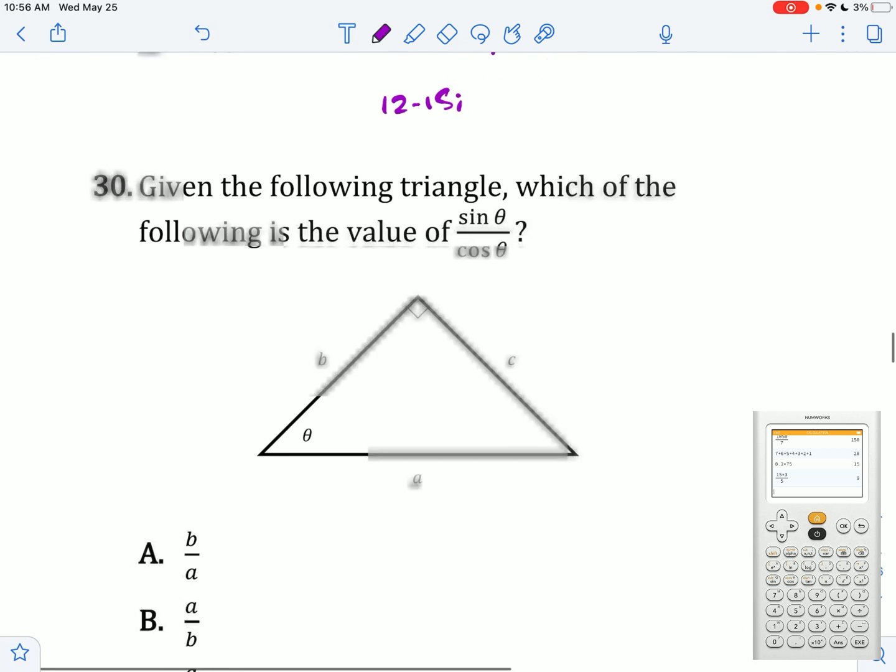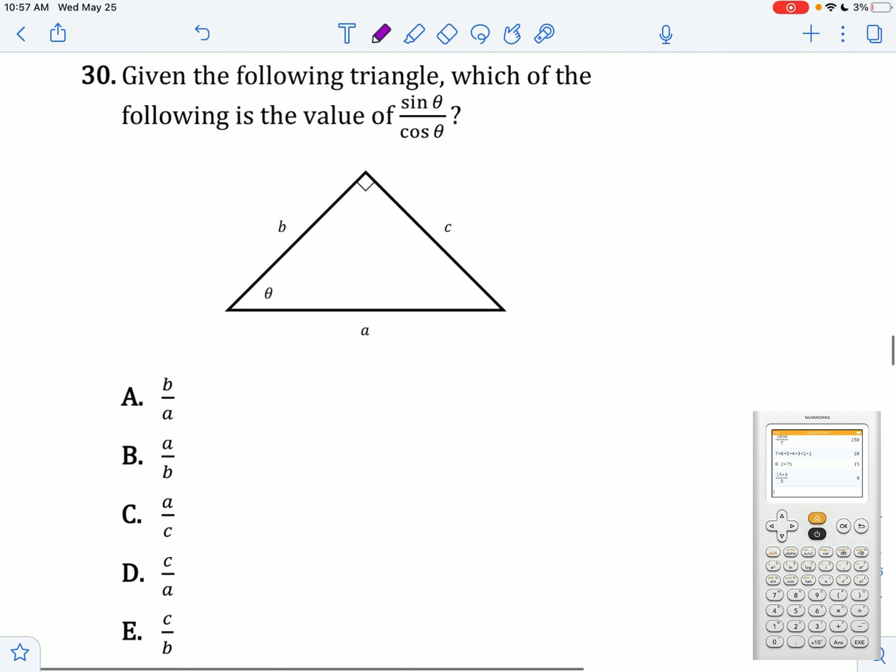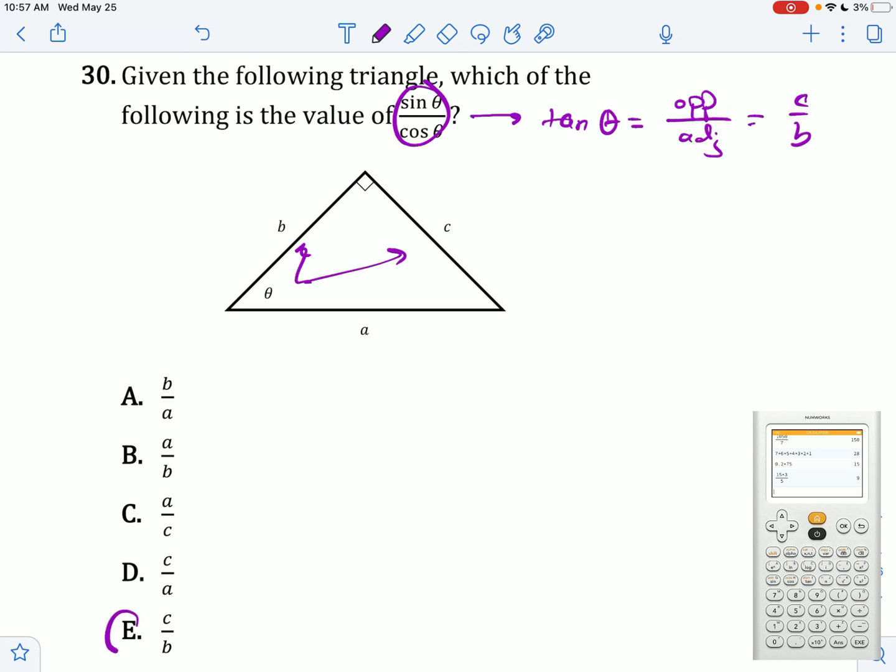Last problem. Given the following triangle, which of the following is sine theta divided by cosine theta? This is just equal to tan theta. Tan theta is the ratio of sine to cosine, which is going to be opposite over adjacent. In this case, that is C over B.